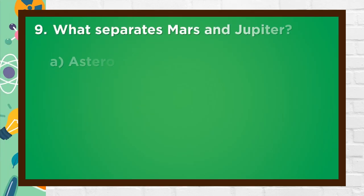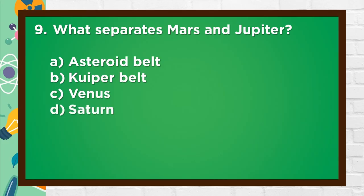Number 9. What separates Mars and Jupiter? A. Asteroid Belt, B. Cooper Belt, C. Venus, D. Saturn. The answer is A. Asteroid Belt